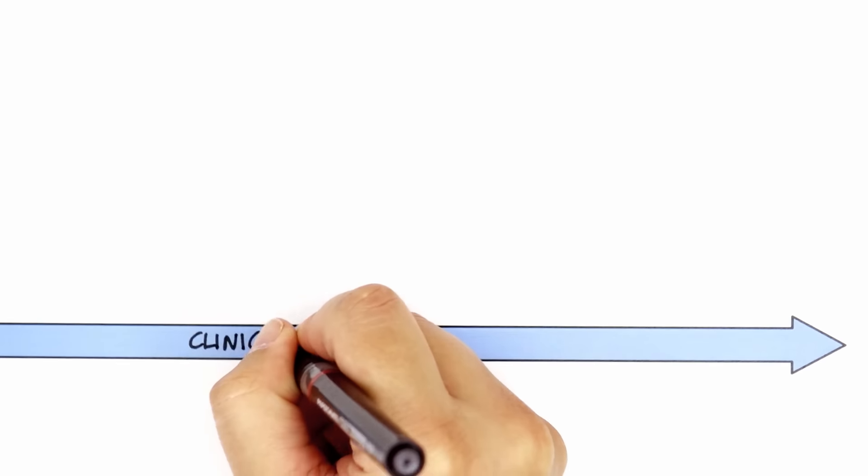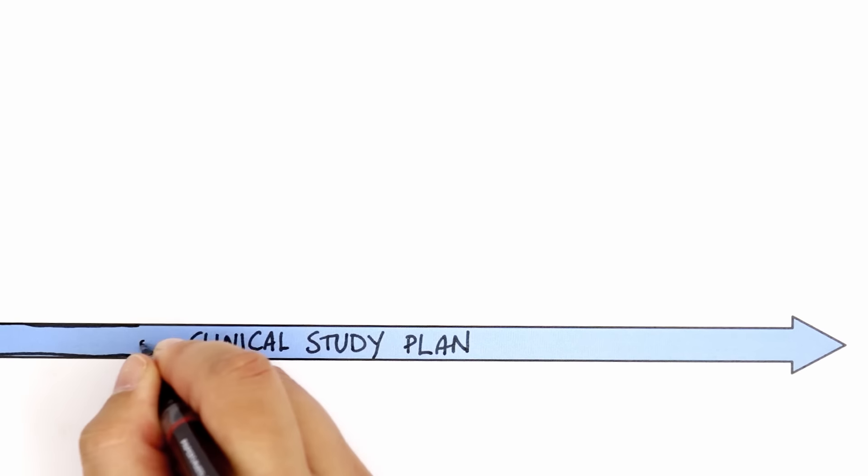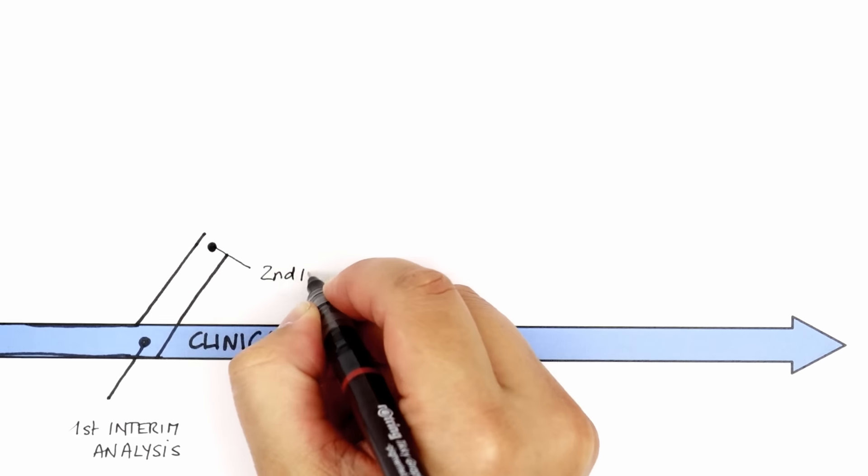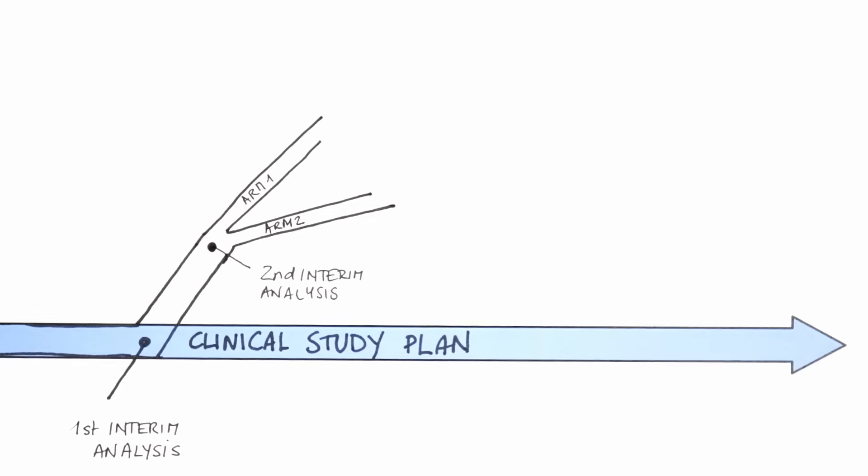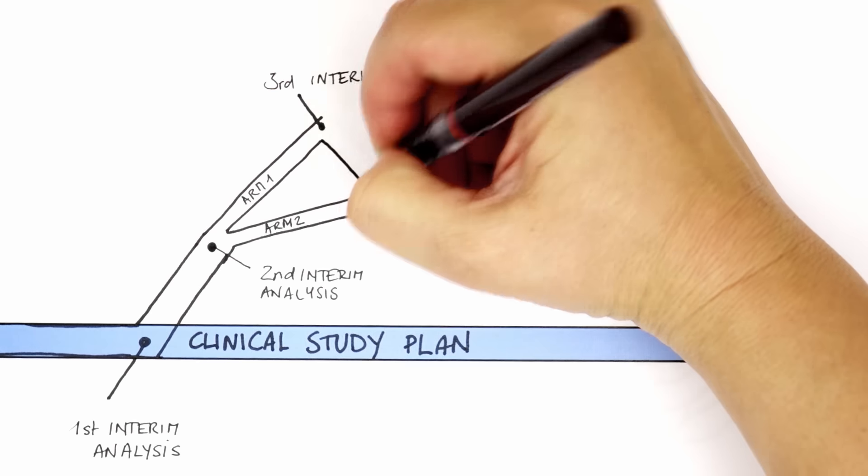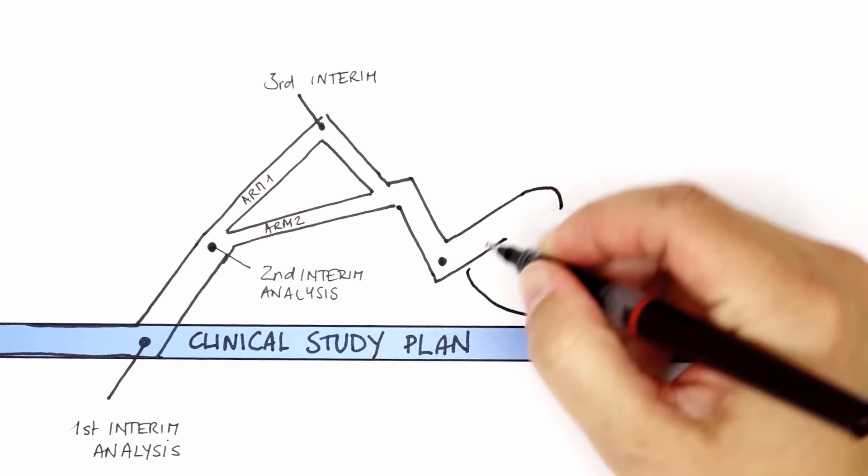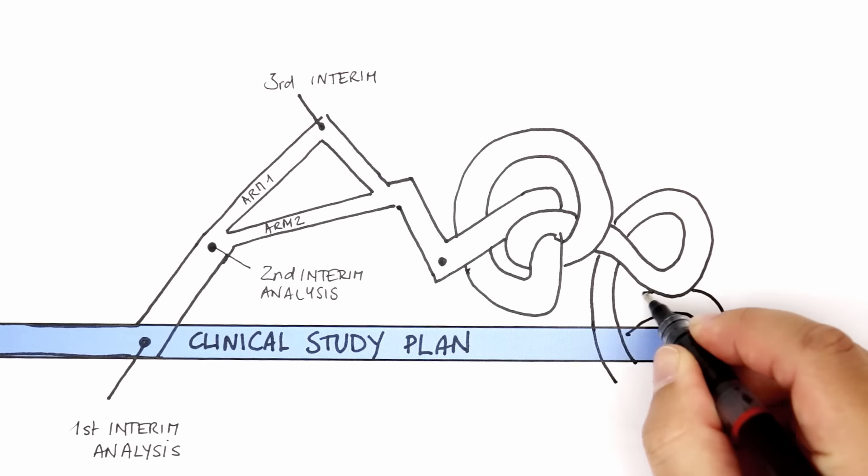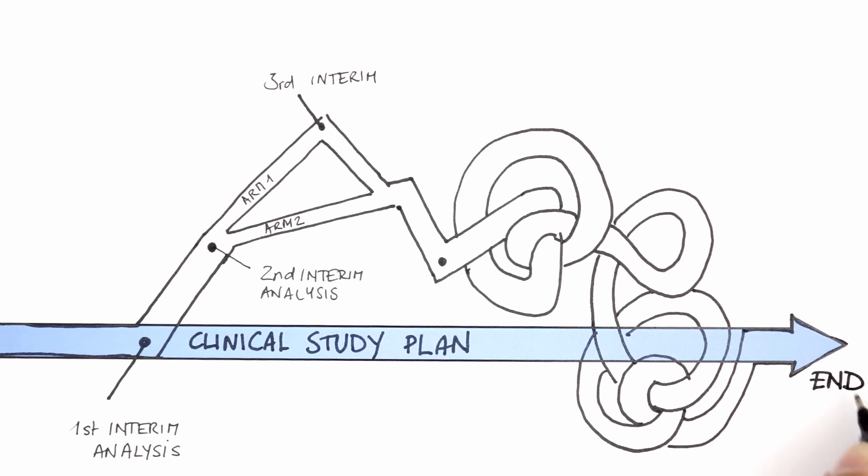Even before a study is completed, enough data may have been collected to allow an interim analysis of its progress. This may lead to changes in the study such as modifications to the dosage, number of patients or patient selection criteria. Studies set up to allow such changes are called adaptive studies.